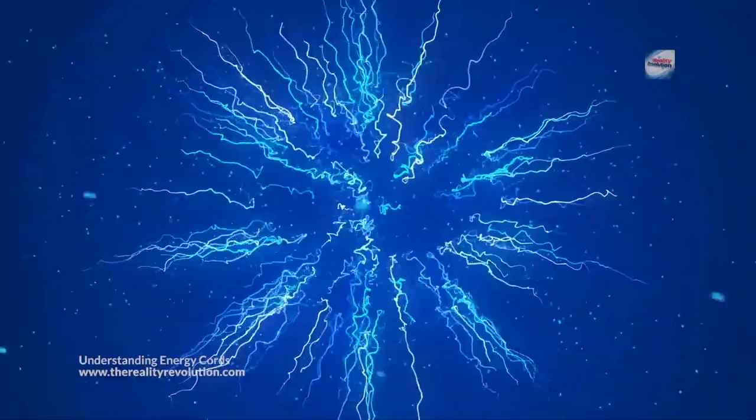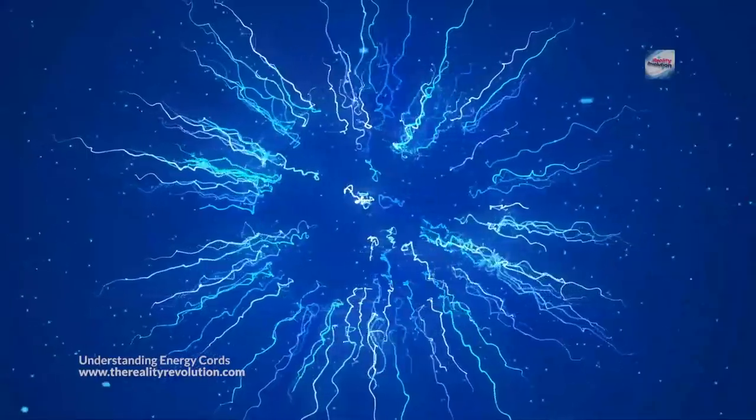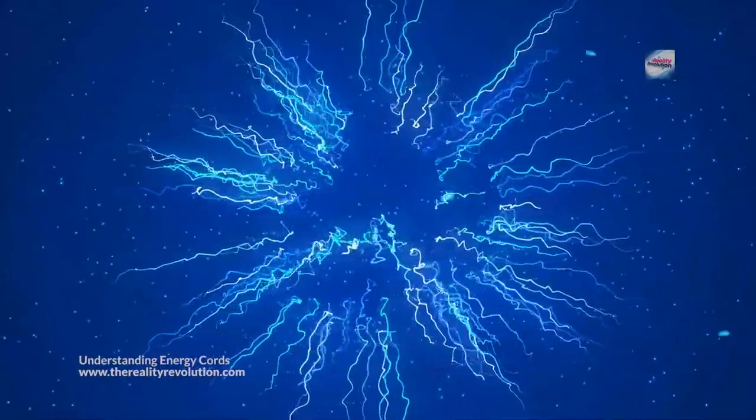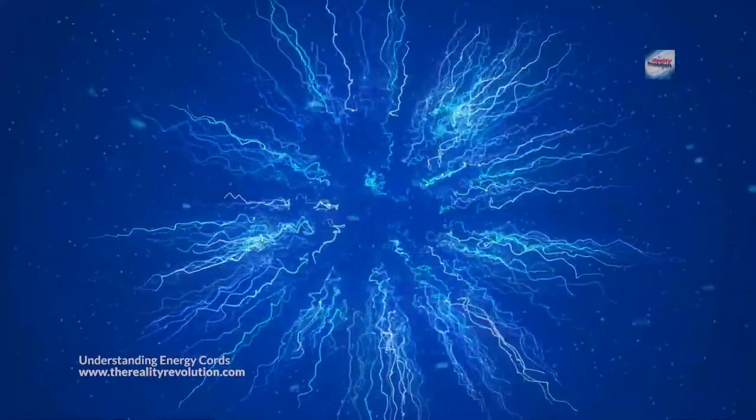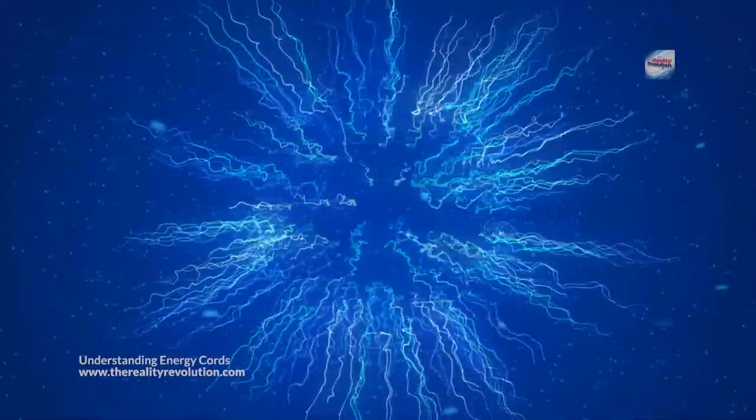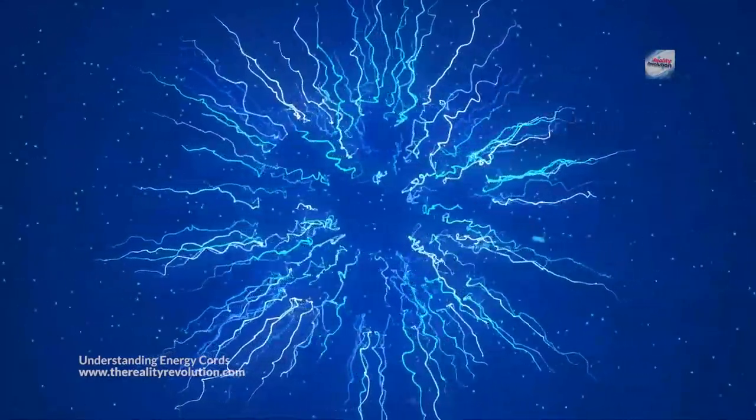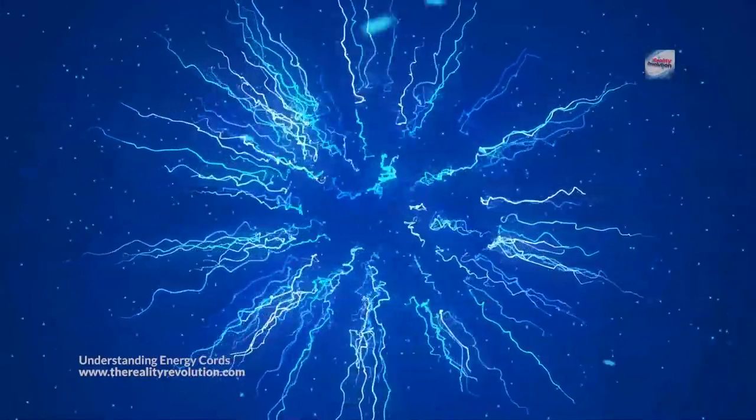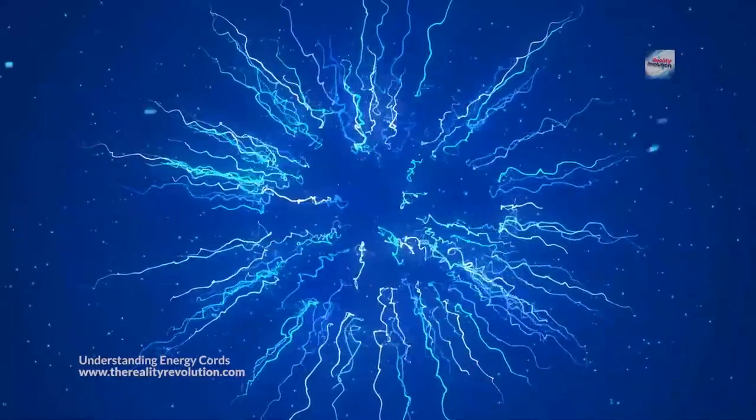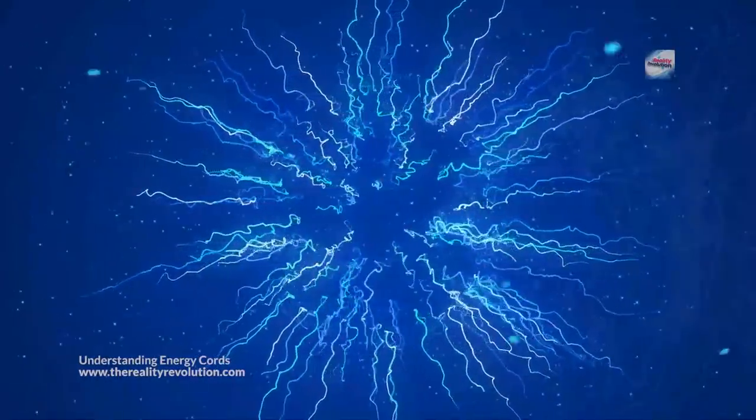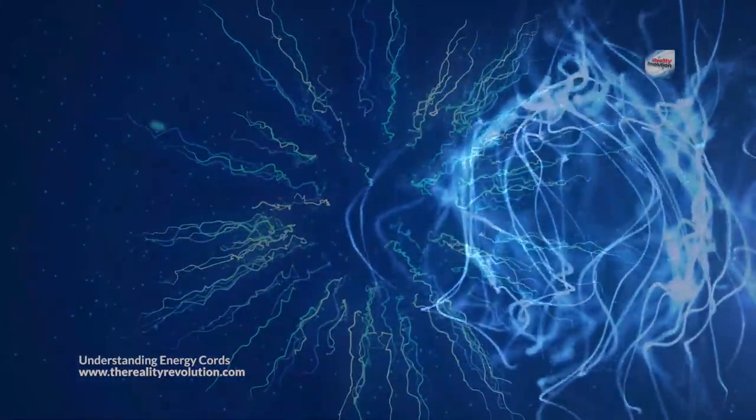Sometimes the strands emanate from the solar plexus. Other times they radiate out from other places in the body such as the third eye, the top of the head, the heart chakra and even the root chakra near the base of the spine. Strands formed when two people are in love can be large, radiant and crystal clear, going from heart to heart chakra. The color can vary from blue to green and even pink and golden, but the colors are always vivid.